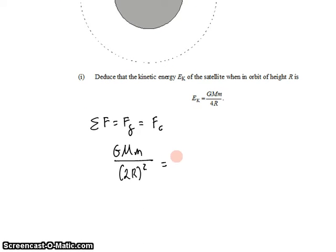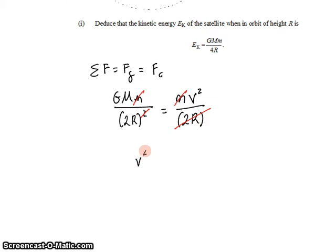Centripetal force is the mass of the object going in the circle, the mass of the satellite, times its tangential velocity squared, again divided by the radius of the circle that it travels in, which is 2r. Some simplifications can be made. Little m cancels with the little m, and 2r cancels with one of these 2rs. And we get that the square of the velocity of the satellite is GM on 2r. And again, this equation looks a little unfamiliar because of the way we've defined r.